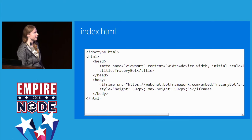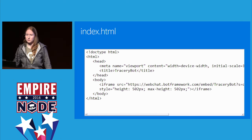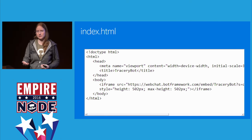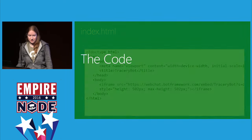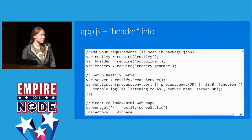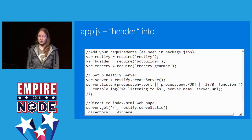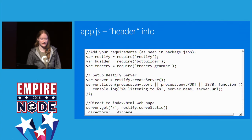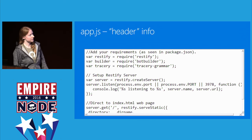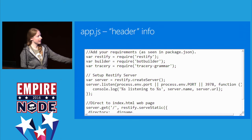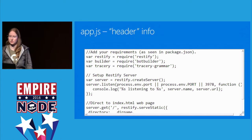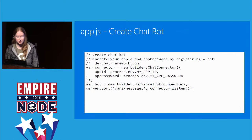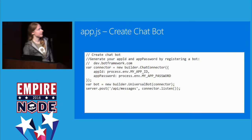The index.html is just an iframe that Microsoft gives you through the bot portal. You go in the portal and embed an iframe into an HTML page, so you can actually navigate to a website. You can go to tracerybot.azurewebsites.net right now from your phones and talk to this corporate jargon bot I built. Here is the code in app.js. I use restify to boot up a server, and I've got environment variables that make it run on the local server or on Azure.